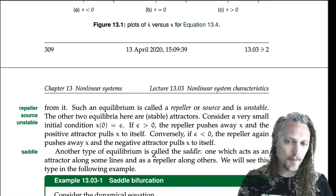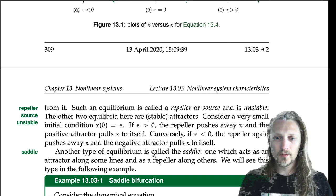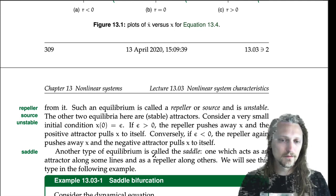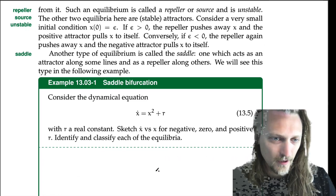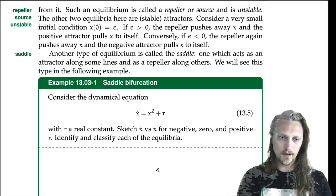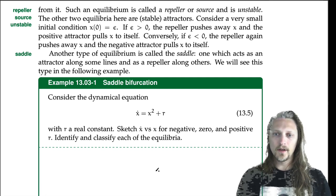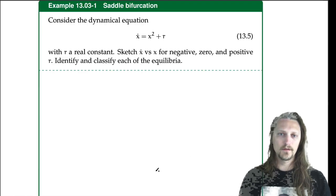There's one more type of equilibrium to consider: one which acts as an attractor along some lines and as a repeller along others. We'll see this type in the following example — saddle bifurcation. Consider the dynamics x-dot equals x-squared plus r, with r a real constant. Sketch x-dot versus x for negative, zero, and positive r, and identify and classify each of the equilibria.